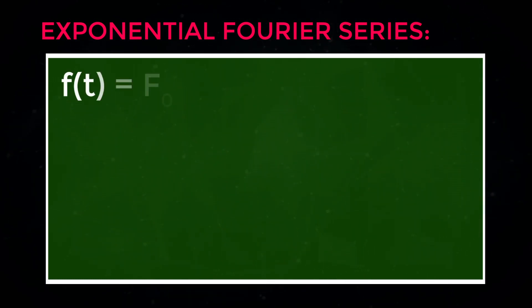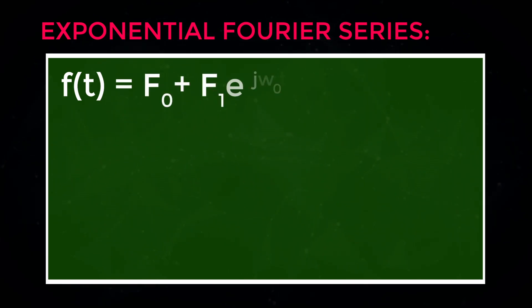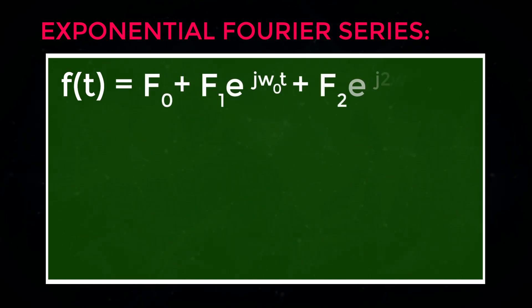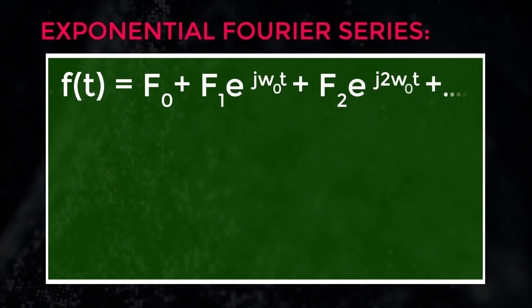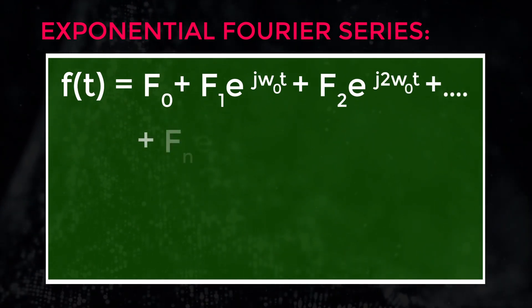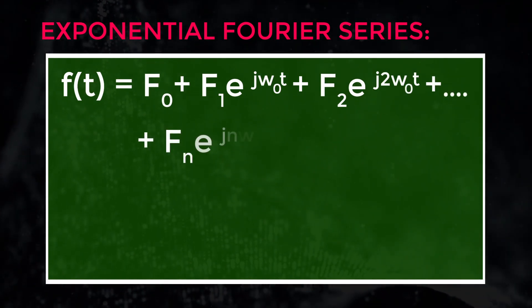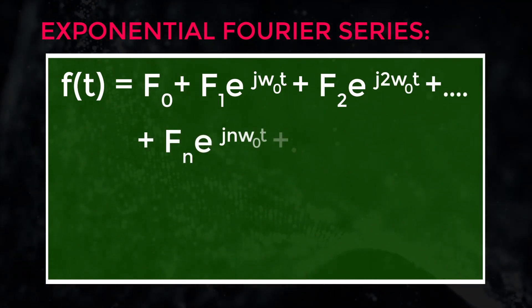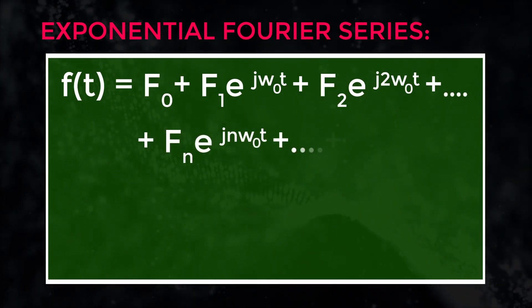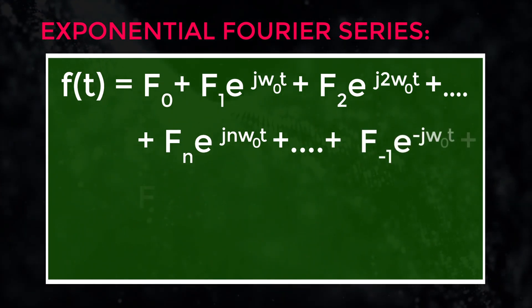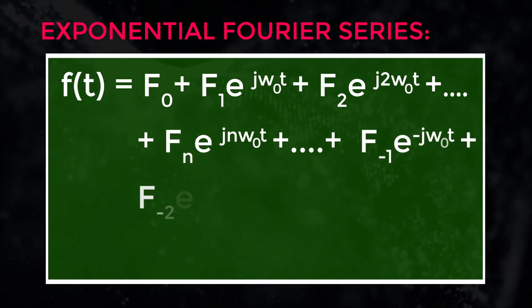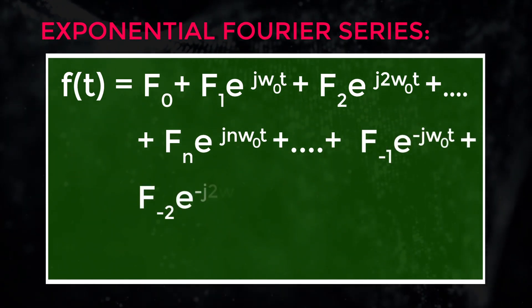f(t) equals F₀ plus F₁ into exponential of j·ω₀·t, plus F₂ into exponential of j·2ω₀·t, plus and so on.